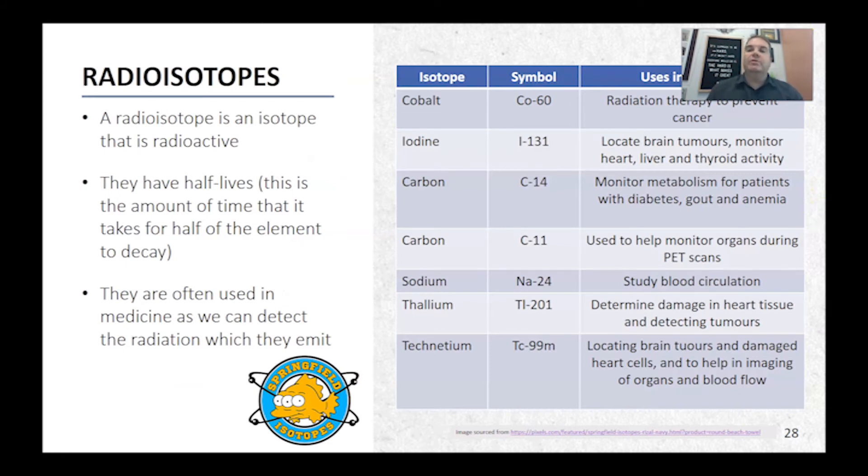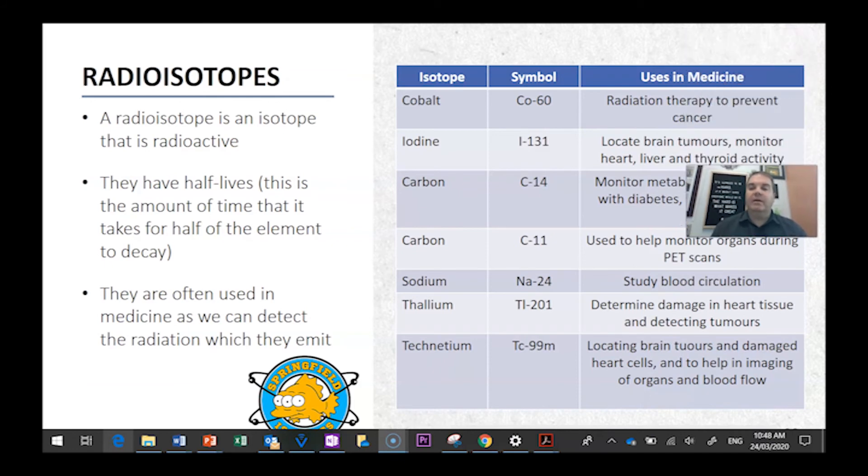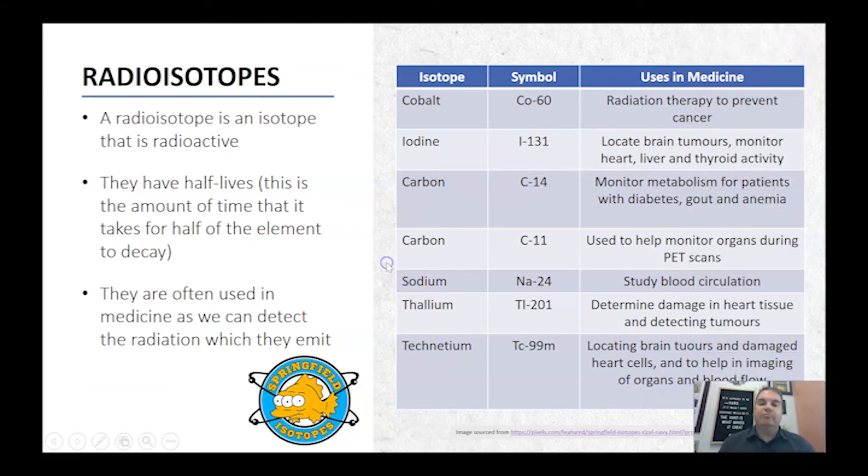Now radioisotopes are isotopes. So they have same atomic number, different mass number, but these ones are actually radioactive. So they have half-lives. That's what's called the amount of time it takes for half of the element to decay. They're often used in medicines. We can detect the radiation they emit. So these are some of the different ones. So cobalt-60 is used as radiation therapy. Carbon-14 is used to monitor metabolism for patients with diabetes, gout and anemia. We can also use carbon for carbon dating in plants and fossils and things like that, because we know the rate at which it decays. So we can look at how much is left, how much there would have been and how old it is.